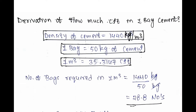Today I am going to teach you how to derive it. First of all, see here — these three formulas, or constants you can say. You should remember these three things for life long: density of cement equals 1440 kg per meter cube, one bag of cement contains 50 kg of cement, and one meter cube equals 35.3147 cubic feet.